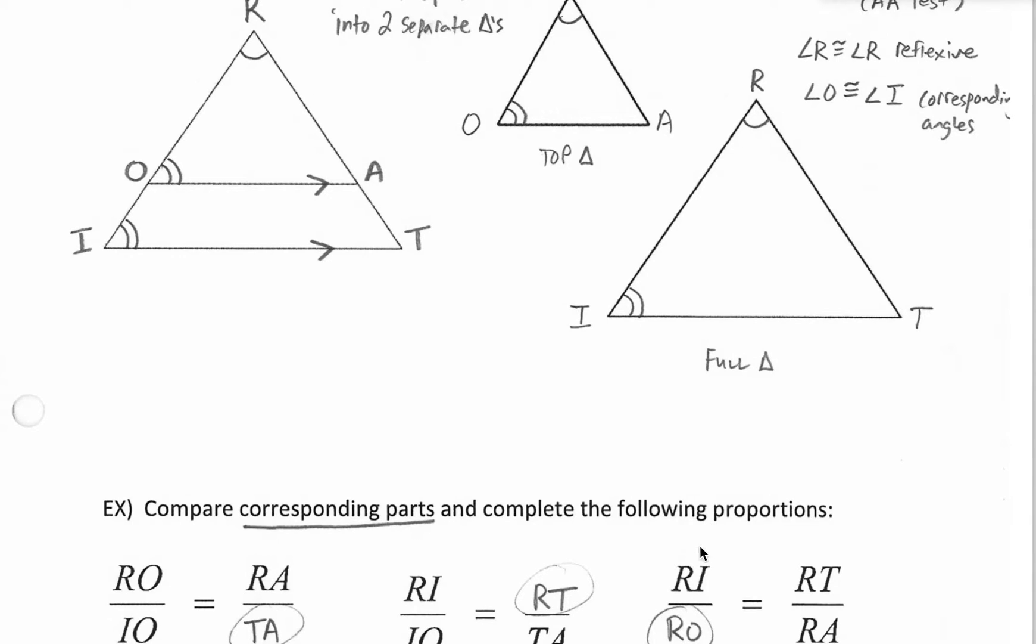All right, another one. RT compared to RA. Let's start there. RT, the total right side, and RA, the top right side. Let's make sure we correspond that over here. That would be the total left side compared to the top left side. So RI compared to RO.